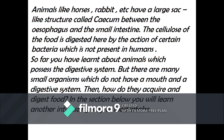Animals like horses and rabbits have a large sac-like structure called the caecum between the esophagus and the small intestine. The cellulose of the food is digested here by the action of certain bacteria like Ruminococcus albus, which is not present in humans.